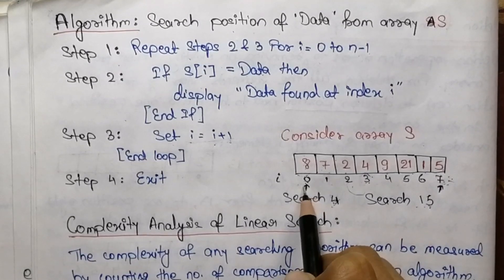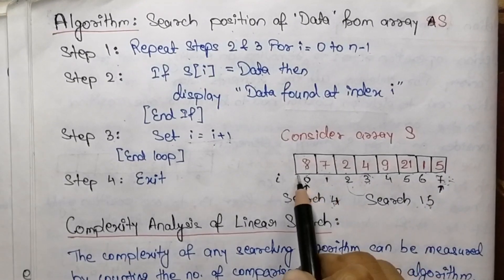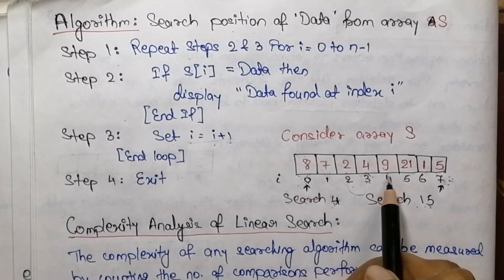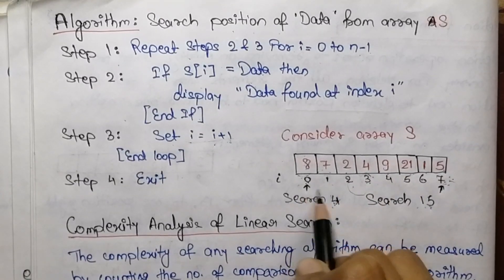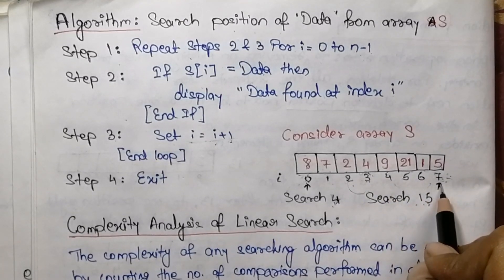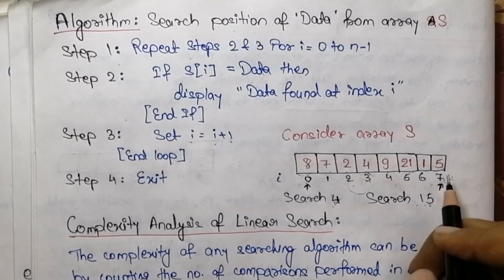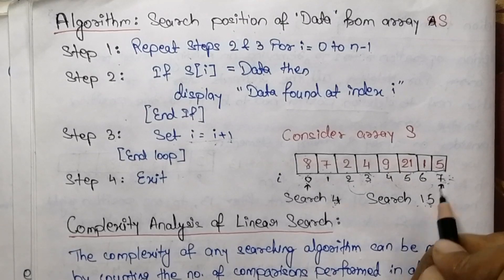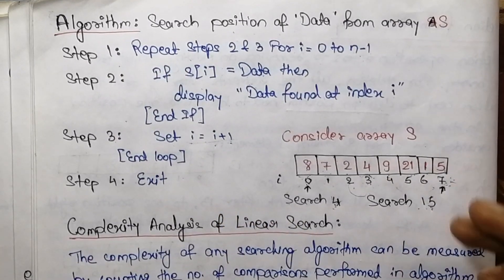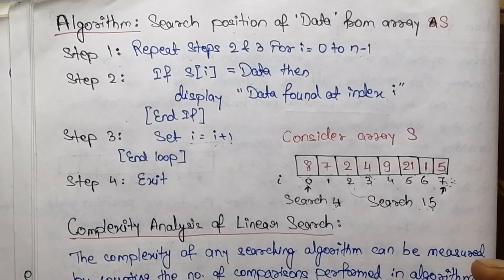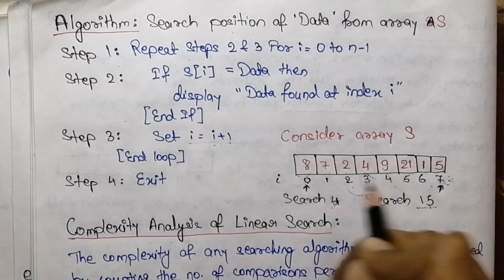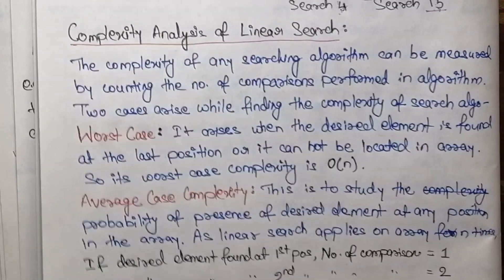Now if we want to search the element 15, in the same way starting from index zero, element 15 is compared with all the elements of the array. Since 15 is not present, by incrementing i we reach the end of the array. As the element is not present, we come out of the loop and exit from the algorithm, indicating that element 15 is not present in the array.